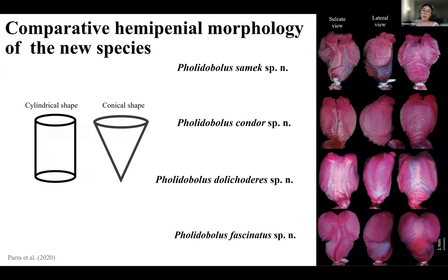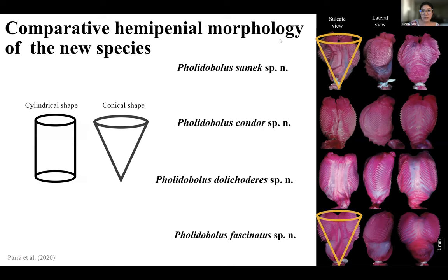We also prepared the hemipenes of the four new species. The hemipenes are the sexual organs of male snakes and lizards, and they have been useful in taxonomic studies. In general, we found that the hemipenes are bilobed — having two lobes separated by the sulcus spermaticus. We also found differences between species: Pholidobolus samec and Pholidobolus fascinatus have hemipenes with a conical shape where the base is thinner than the rest of the body, whereas Pholidobolus condor and Olicoderes have a cylindrical shape.